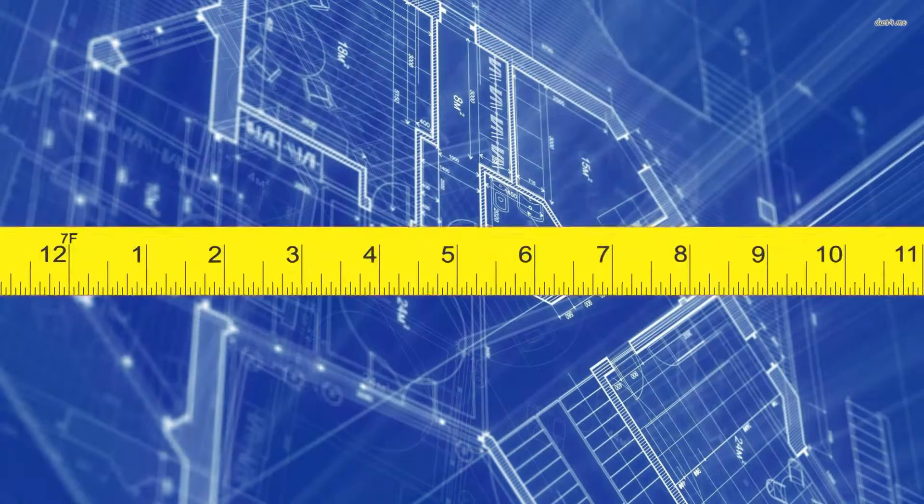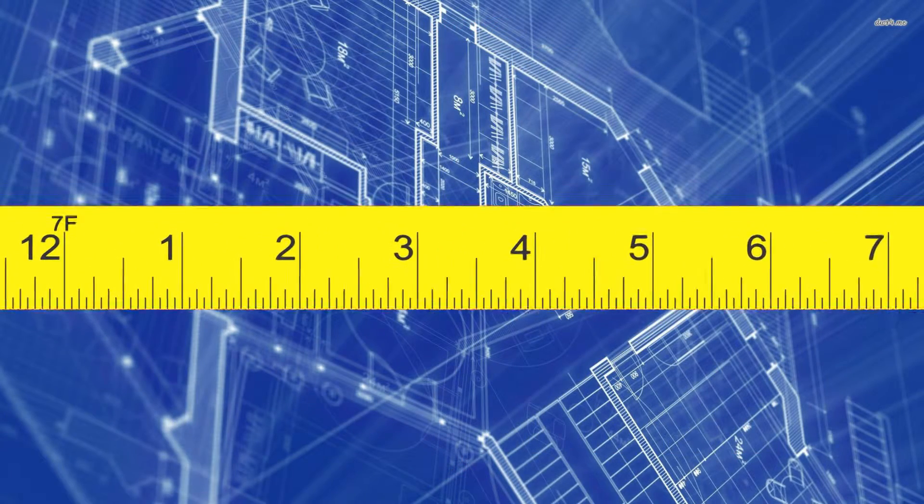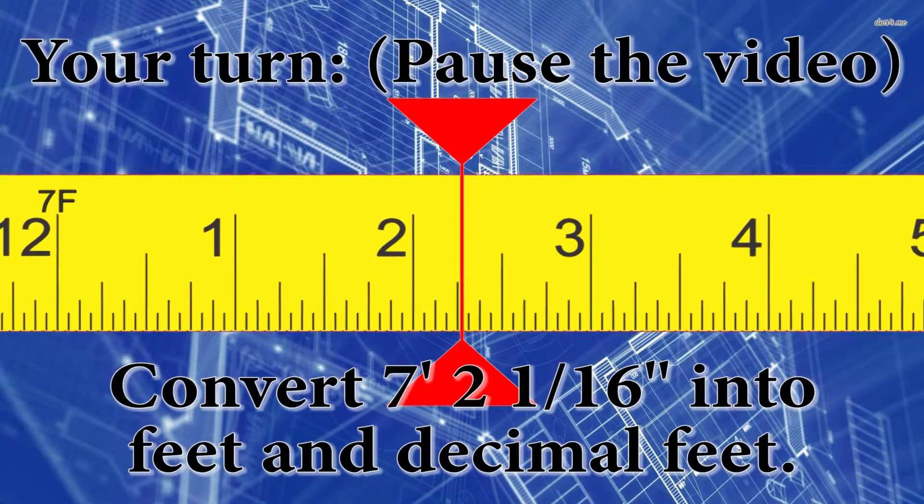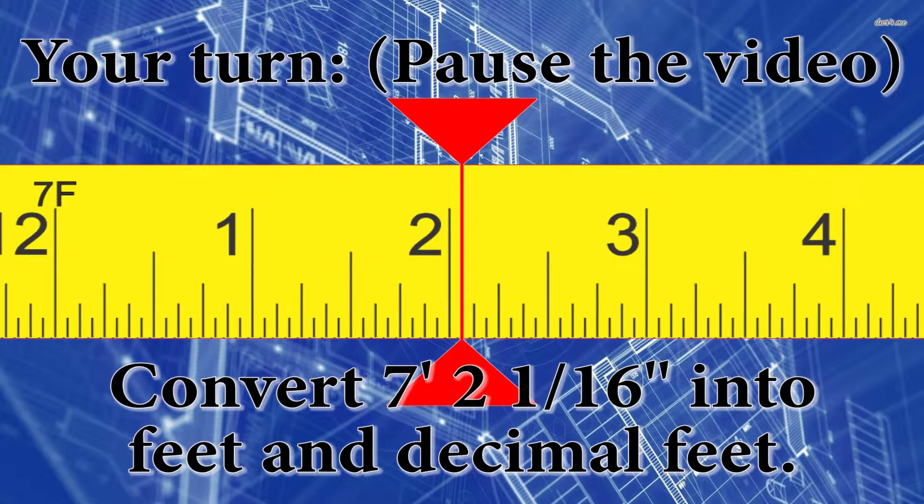And now finally the last example. It's your turn. I have a measurement of 7 foot 2 and 1 sixteenth of an inch. Please pause the video and convert this into feet and decimal feet.